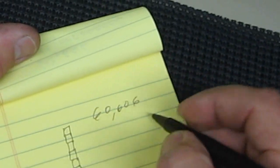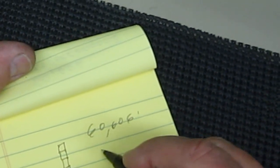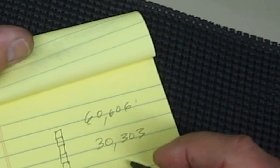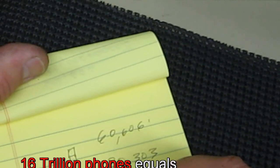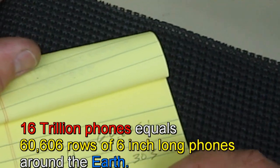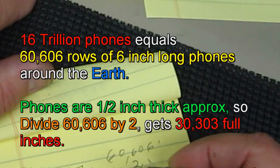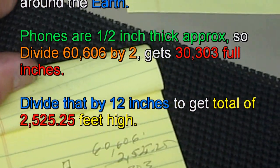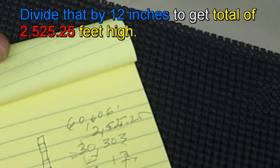And that divided by 12 would be, let's see, that's 2,525.25 feet high. That's how high that would be, 2,525 feet if you piled those cell phones up half inch on each side, and of course that would go completely around the Earth.